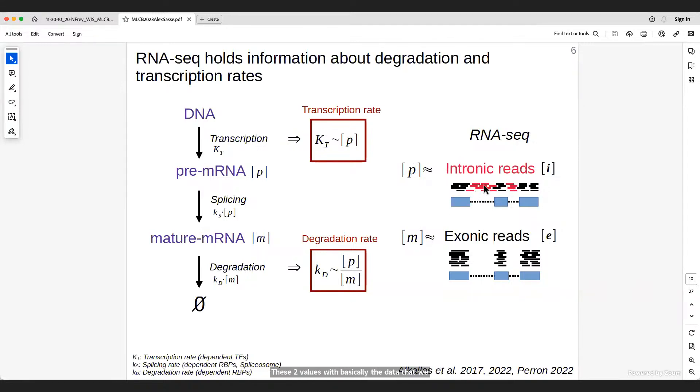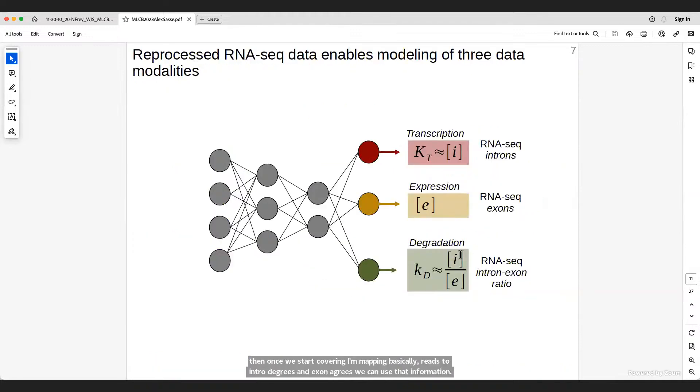And so, with this knowledge in hand, we can turn to RNA-seq, and we can think about how we can approximate these two values with basically the data that we have. And so, when we look at RNA-seq, intronic reads are likely to come from the premature mRNA, whereas exonic reads will be used as a proxy for mature mRNA. And so, once we start covering, mapping basically reads to intronic reads and exonic reads, we can use that information to then get three different data modalities from the same RNA-seq data set. So, that is transcriptional rate, expression, and degradation rate. And most importantly here is that now that we can do this with every data set, we get this basically for every cell type and every condition that we have RNA-seq data for.